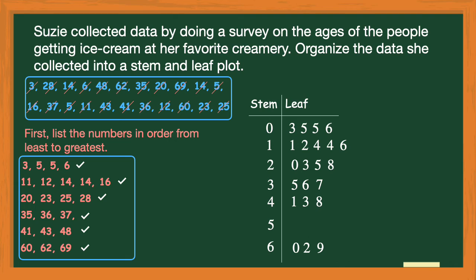Now I need to make a key so that my reader understands what they're looking at. I'll pick a number from my stem and leaf plot — I chose 14. So I put a 1 with a vertical line separating the 1 and the 4, an equal sign, and the number 14. But since this comes from a real world problem, I want to tell my reader what these numbers represent — they represent ages. So I write that this means a person who is 14 years old.